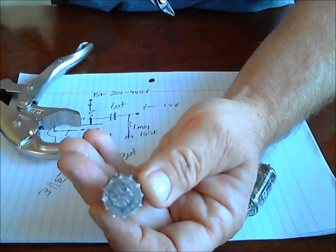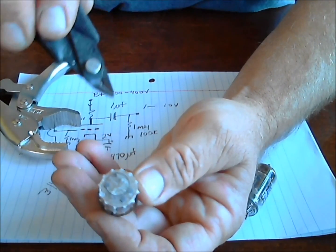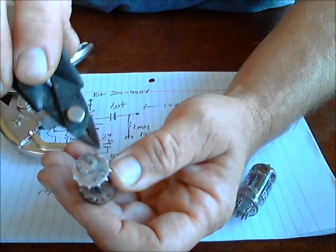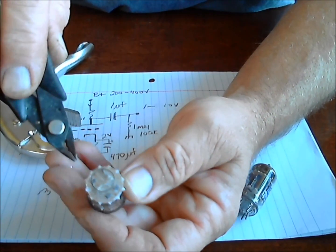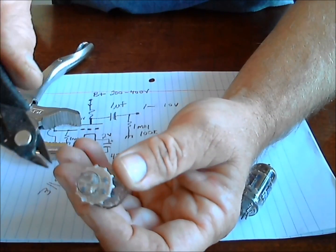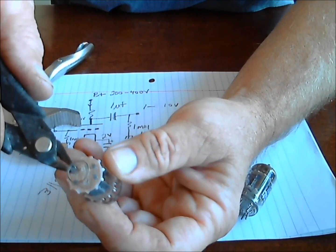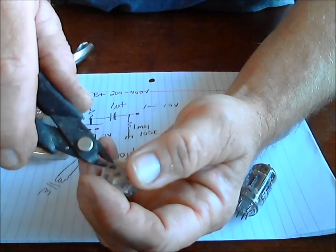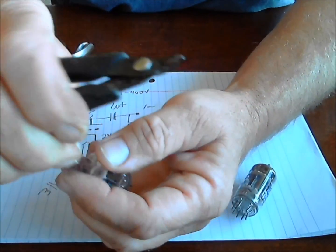This halo at the top is the getter. There are people out there who talk about halo getters and double halo getters and d-getters and so forth. Some people think that an RCA 12AX7 with a d-getter is just the most incredible thing in the world. I'm not so sure. Let's cut the getter off, and there he goes.